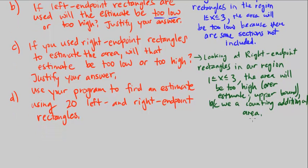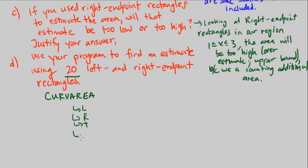So part D says to use your program to find an estimate using 20 left and right endpoint rectangles. Well, luckily we have a program called Curve Area. That does this. Actually it does the left endpoint area, the right endpoint area, the trapezoid area, and if you followed previous videos, we included the midpoint area. The midpoint rectangle area.